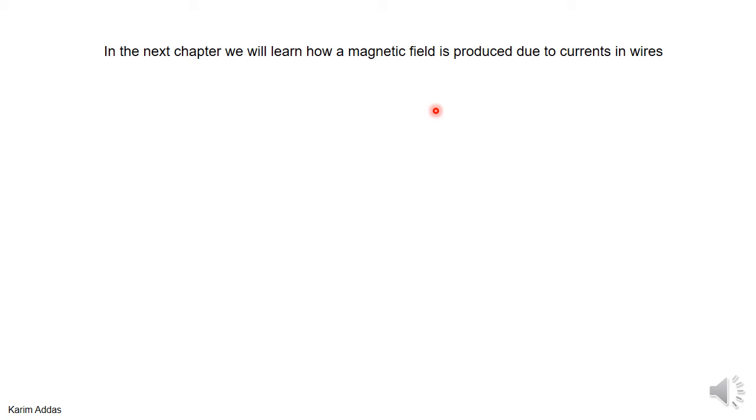But in the next chapter, we'll learn how the magnetic field is actually produced by currents that are in wires. So when you have a wire with a current in it, that produces a magnetic field in the region around it. And we'll learn this in the next chapter, not in this chapter.